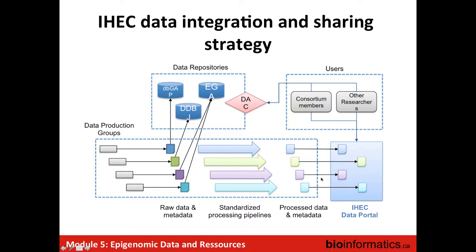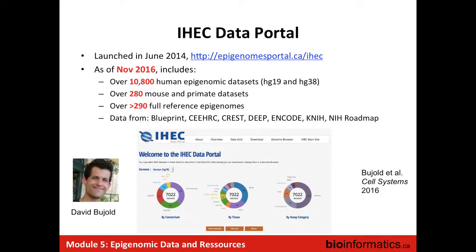The data we'll work with today is part of that processed data that's not identifiable. The portal that was set up really aggregates data from all these different consortiums — it's got over 10,000 epigenomic data sets and data sets on a number of other species as well. This is meant to be a resource such that, when you have a gene of interest and a tissue of interest, you're able to go in and look at what's happening at the chromatin and expression level around that region.